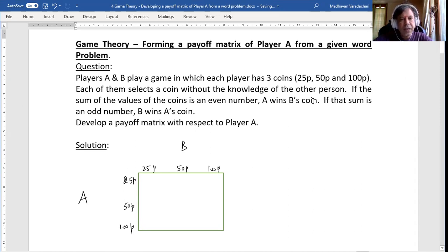Now the question says if the sum of the values of the coin is an even number... Now if A adopts his strategy as 25 paise, if he selects 25 paise coin and shows it, same time B also shows the same coin, 25 paise. Sum of this is 50. 50 is an even number. That means A wins B's coin. B's coin is 25 paise, so A is earning. So I will say it is 25. He will be earning 25 paise.